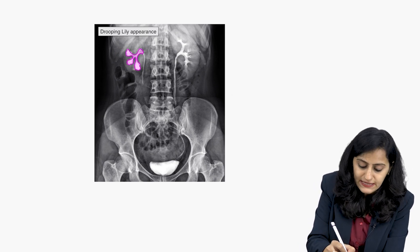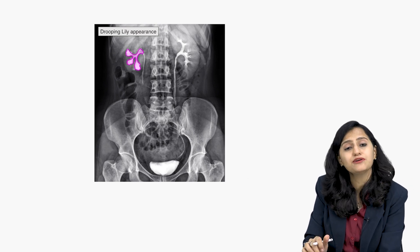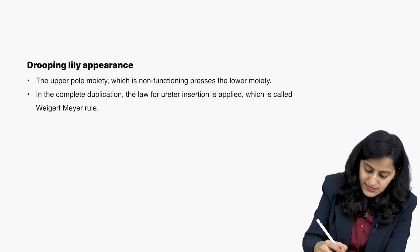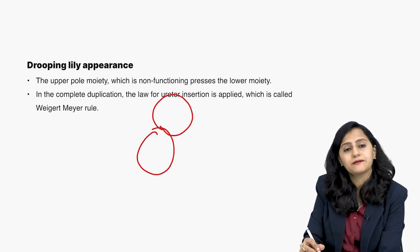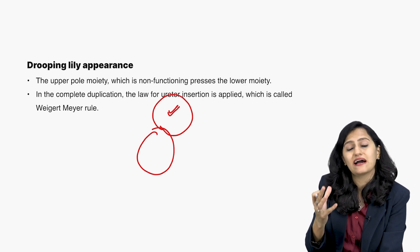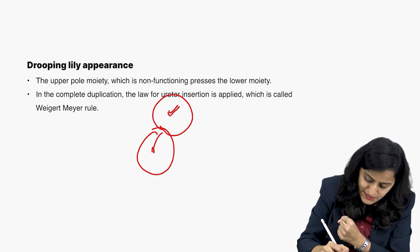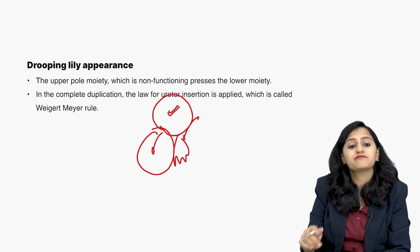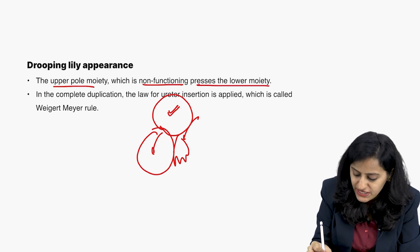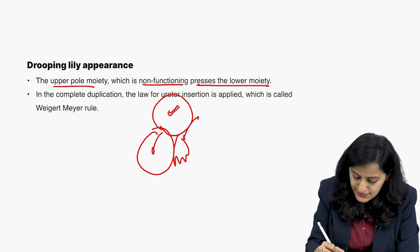When there is complete duplication, the appearance seen is called the drooping lily appearance. Why do you get drooping lily appearance in complete duplication? The upper moiety is generally obstructed and hydronephrotic — non-functioning. It presses on the lower moiety, causing the lower moiety to droop down under pressure from the upper moiety. So the upper pole moiety is non-functioning and presses the lower moiety, giving the drooping lily appearance.